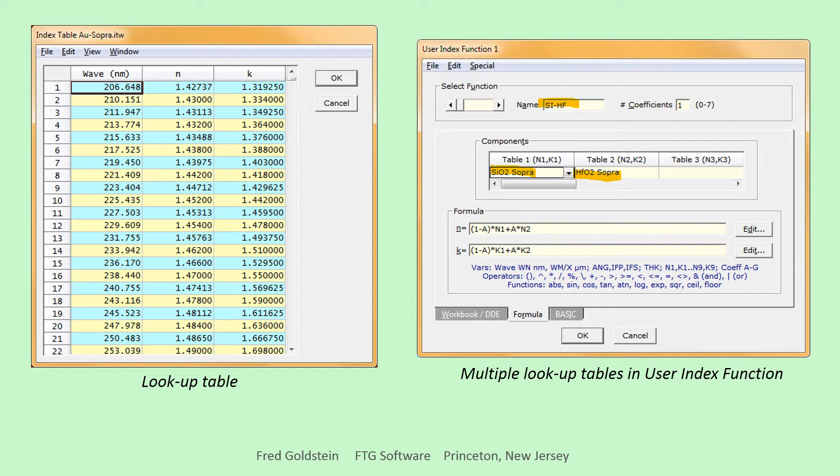We define user index function SiHF as a function of HfO2 fraction A. Once a function is defined, we verify by evaluating and plotting as shown in the next slide. More about the formula editor later.